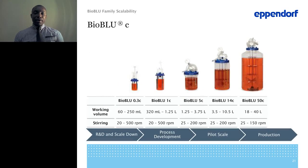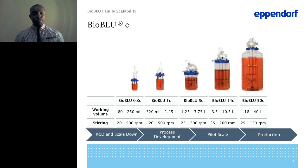For the single-use family scalability: if you want to use single-use in your early bench-type process development, we make it easy to scale up to pilot size, all the way up to a 50-liter vessel with a working volume up to 40 liters. There are various agitation ranges — from 20 RPM in the 0.3 L bioreactor all the way up to 150 RPM for the single-use 50-liter vessel — along with various working volumes.